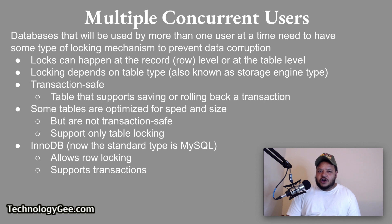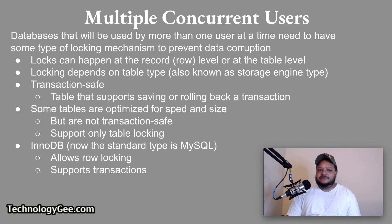Multiple concurrent users: databases used by more than one user at a time need some type of locking mechanism to prevent data corruption. Locks can happen at the record level, the row level, or at the table level. The type of locking available depends on the table type, also known as a storage engine type. A table type that supports saving or completely rolling back a transaction is referred to as transaction safe. Some table types are optimized for speed and size but are not transaction safe and support only table locking. A table type such as InnoDB, which is now the standard type in MySQL, allows row locking and also supports transactions.